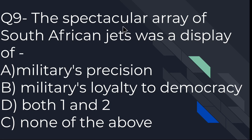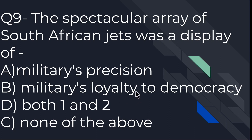The spectacular array of South African jets was a display of what? The options are: military's precision, military's loyalty to democracy, both A and B, or none of the above. So C — both military's precision and military's loyalty to democracy — is the right option. Let us move to the next question.